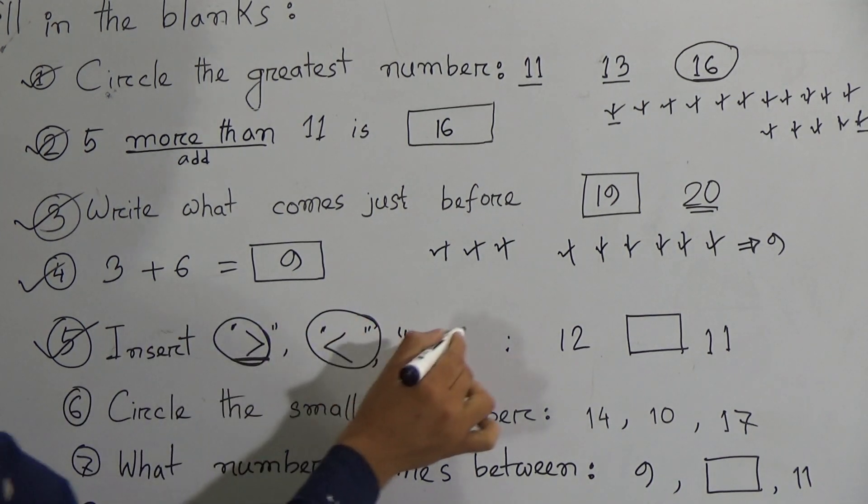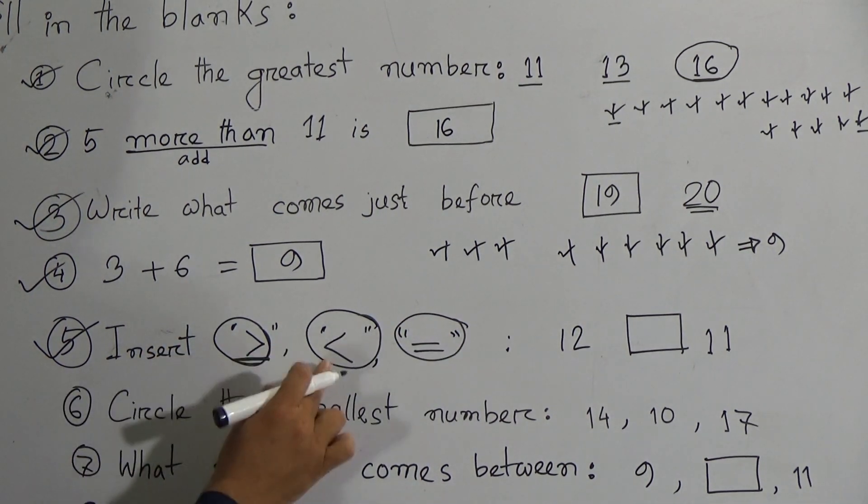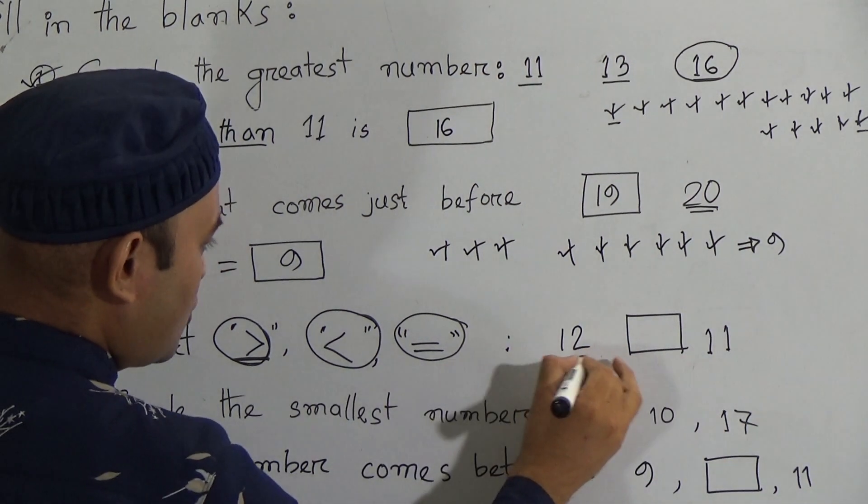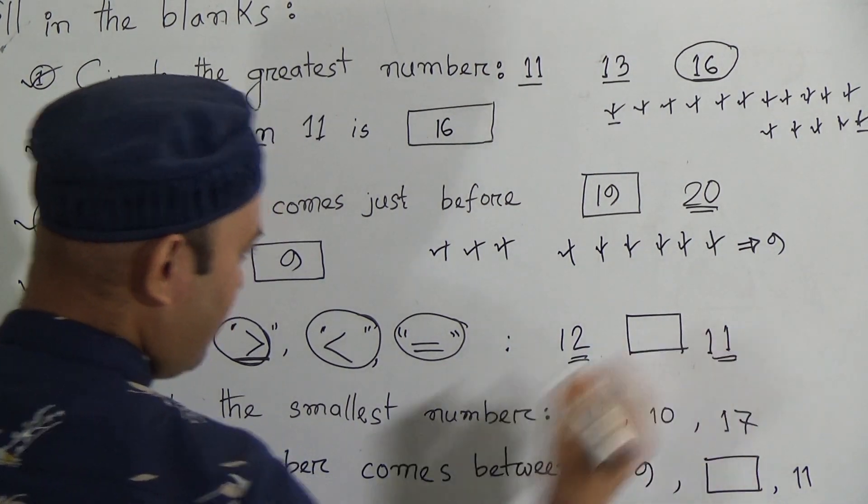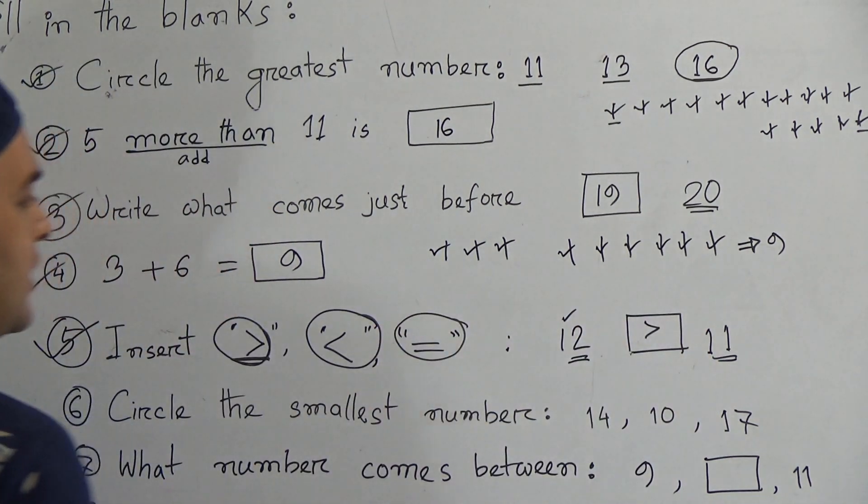This is smaller than sign, and this is equal sign. Insert greater than, less than, or equal between this one. This is 12 and this is 11. So here 12 is greatest, so here it will be greater than sign.